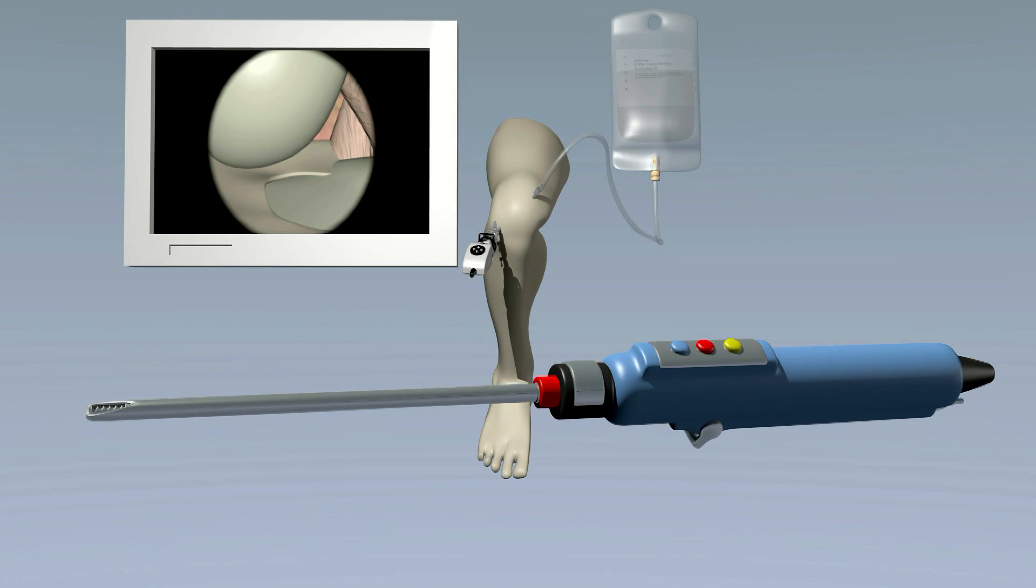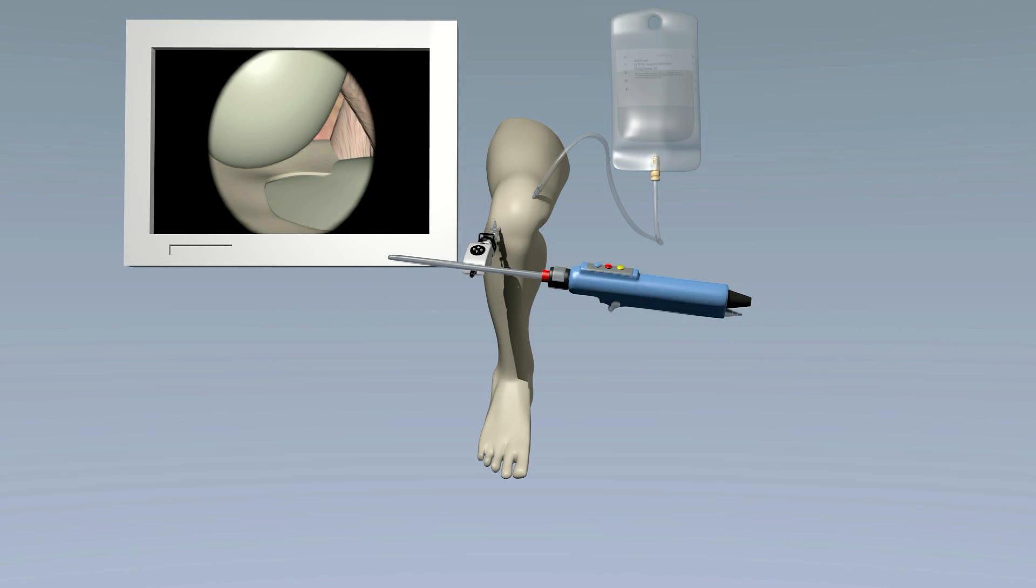One of the most commonly used instruments in knee arthroscopy is the electric shaver. A shaver has tiny rotating teeth that gently shave away unwanted cartilage and joint tissue.